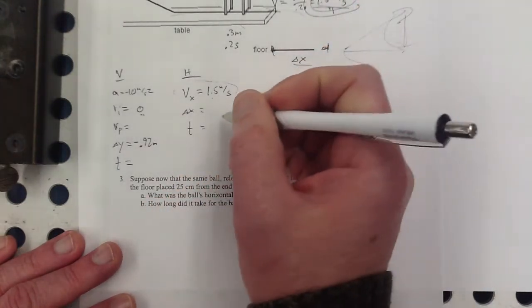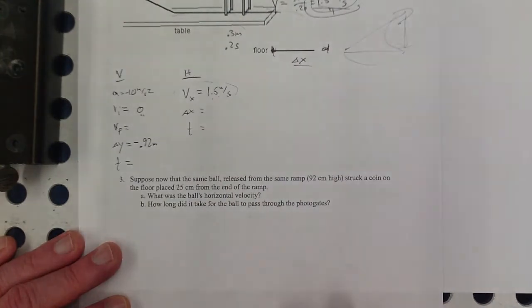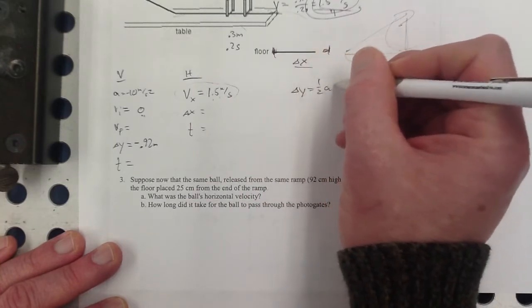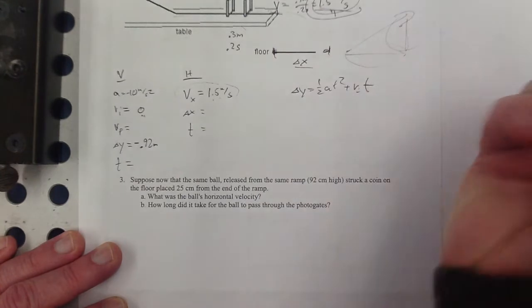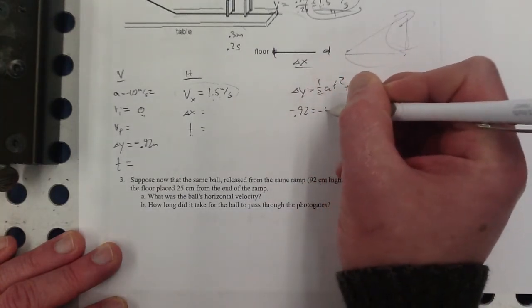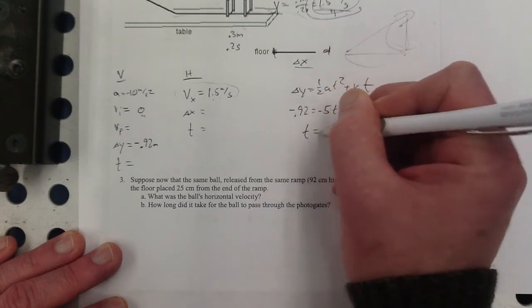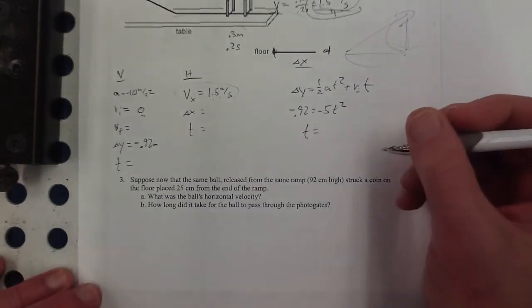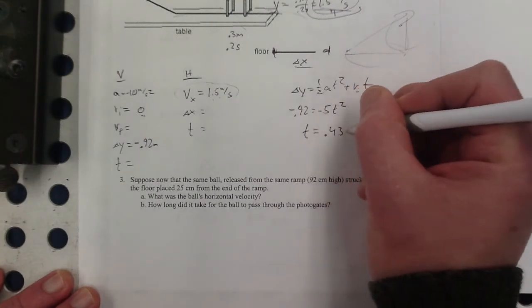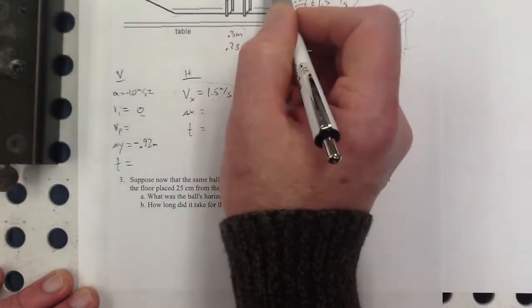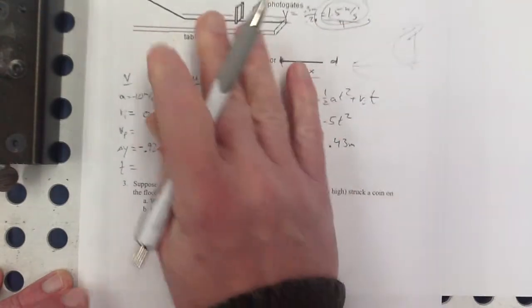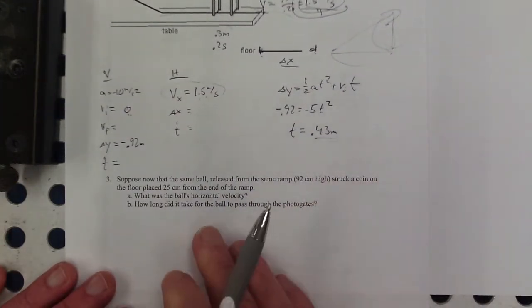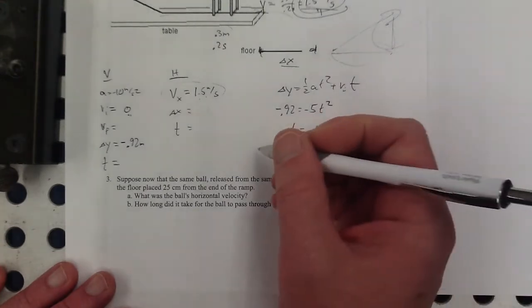And now I'm going to use my delta y equals one-half at squared plus vi t, vi zero again. So do that on my calculator. It's about 0.43 seconds. The lab benches in my classroom here, I'm actually standing at one of those right now, are in fact about 92 centimeters above the floor. So that's about how long it takes for something rolling off one of my lab benches to get to the floor.